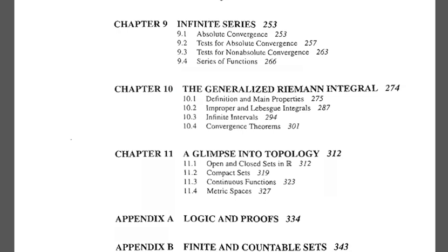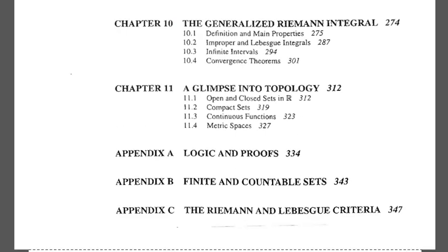After that, a glimpse into topology is given at the last of the book. But most books have introduced this chapter at the beginning, because in books like Rudin they discuss all the concepts with metric spaces. But in this book, the concepts are defined with sets. So Bartle-Sherbert discusses metric spaces, compact sets, continuous functions, and open and closed sets in real numbers at the last of the book. So that's all. Thank you very much.